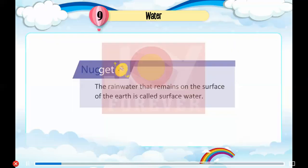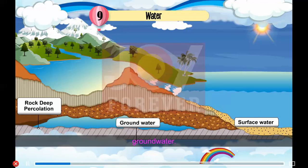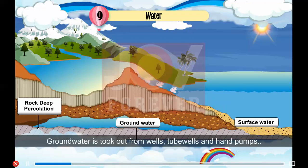The rain water that remains on the surface of the earth is called surface water. Some rain water goes deep into the ground and is known as ground water. Ground water is taken out from wells, tube wells and hand pumps.